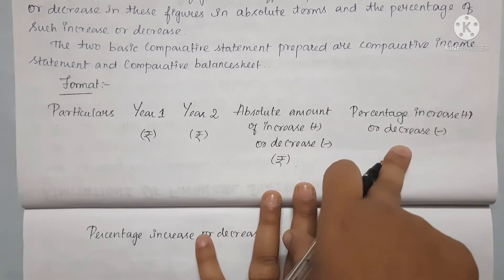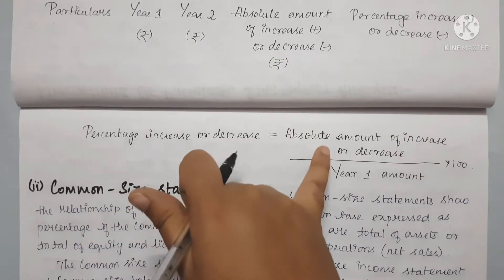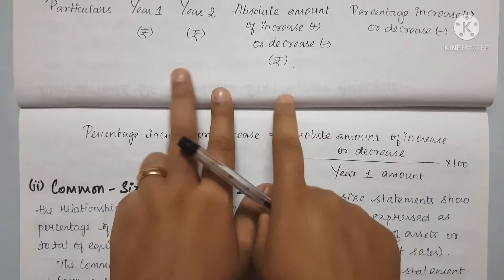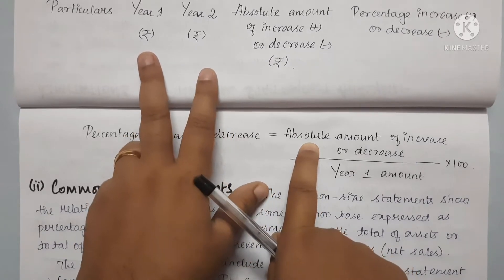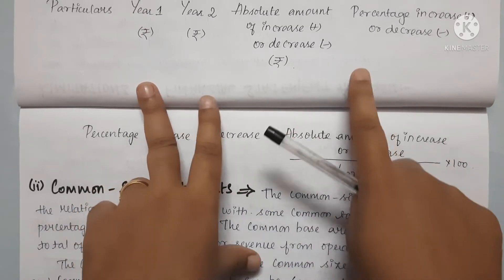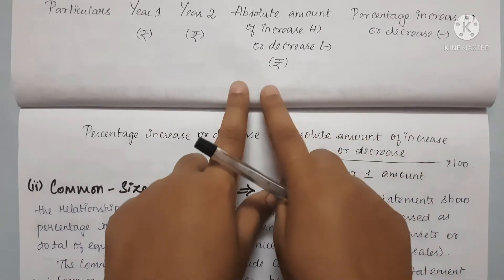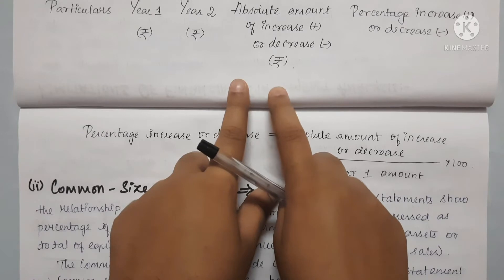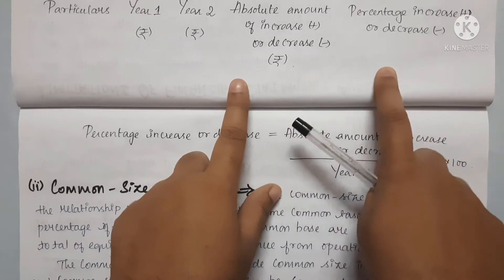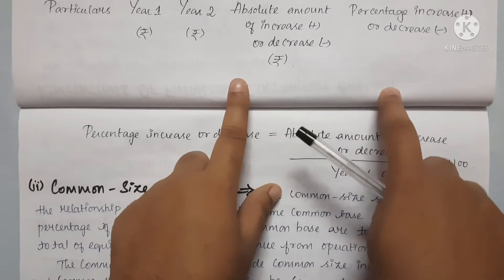Next, we calculate the percentage increase or decrease. The formula is: take the increase or decrease amount, divide by the first year figure, then multiply by 100. If we decrease the item, we get a negative percentage; if we increase the amount, we get a positive percentage. This is our comparative statement formula.